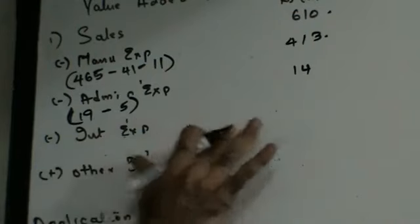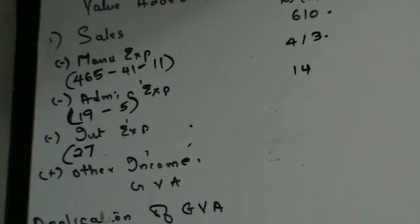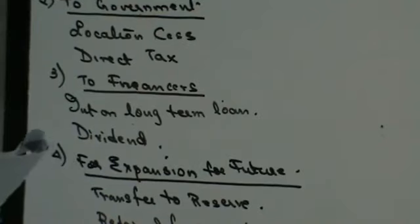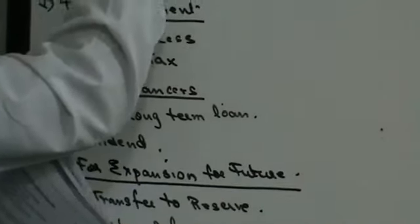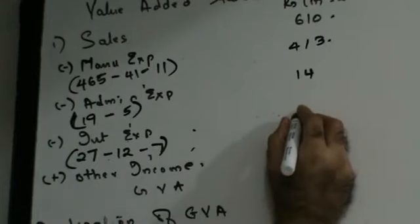Next, interest expenses. As per the income statement, my interest expenses are 27. Looking at working note 3: working capital loan and bank, interest on fixed deposit, and interest on debentures. I have told you to take only long-term loans. Both interest on fixed loans from IDBI and debentures are long-term, so both entries will be considered — I subtract 12 and 7. No working capital loan. So the net interest = 27 minus 12 minus 7 = 8.